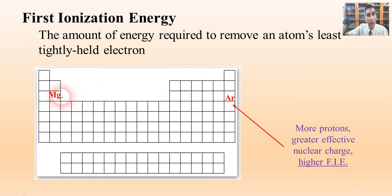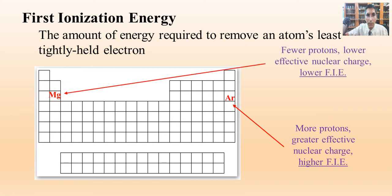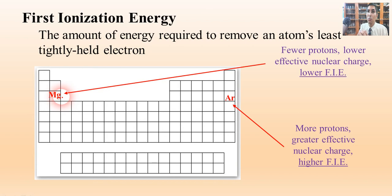On the other hand, magnesium doesn't have as many protons — significantly fewer — so it has a lower effective nuclear charge, meaning less attraction. It's going to be a lot easier to remove that last electron from magnesium.